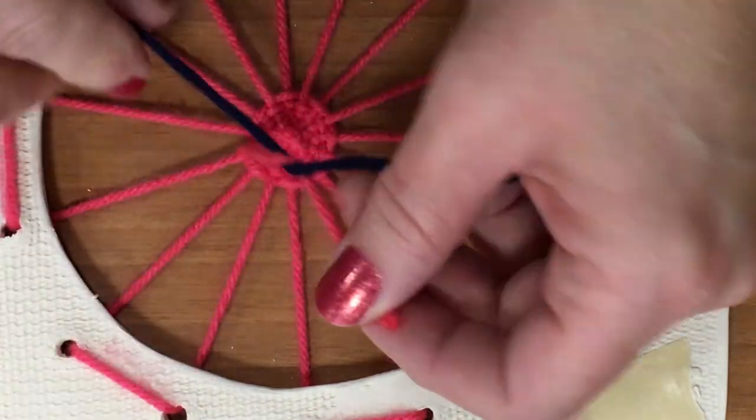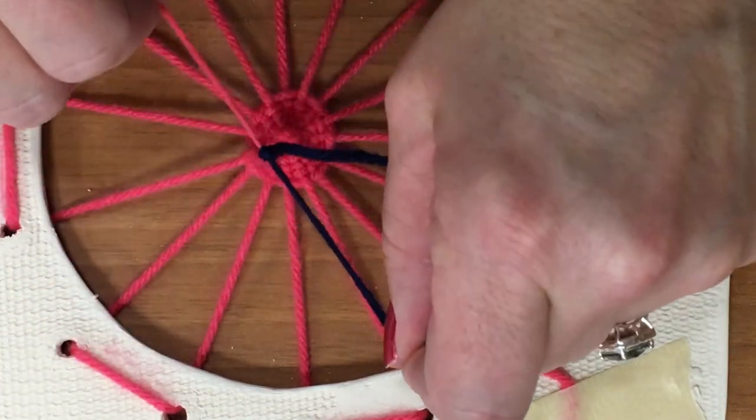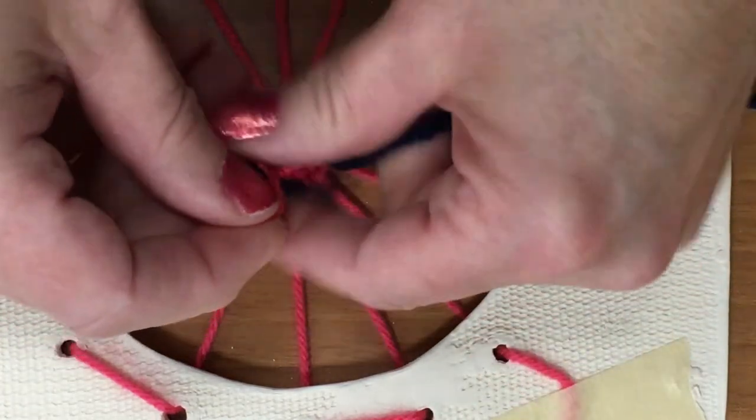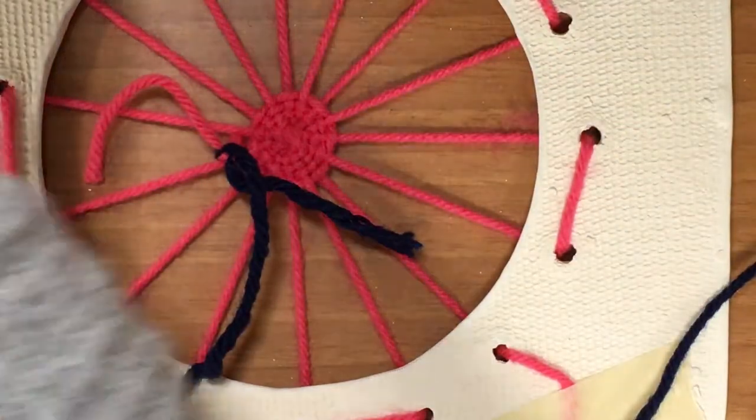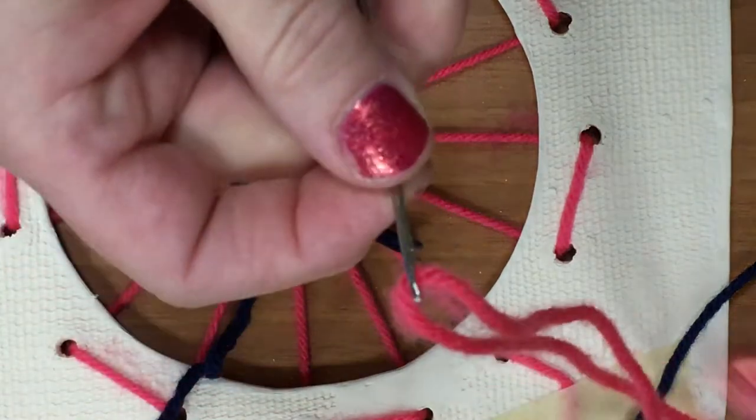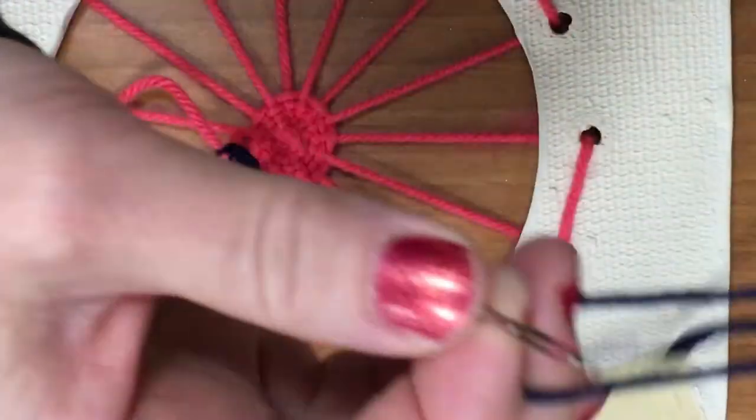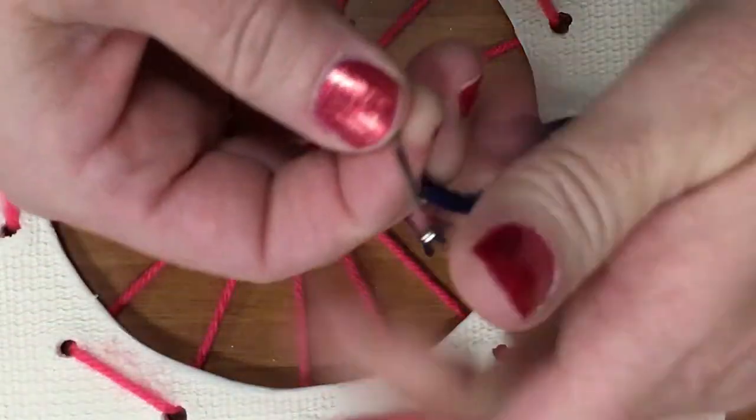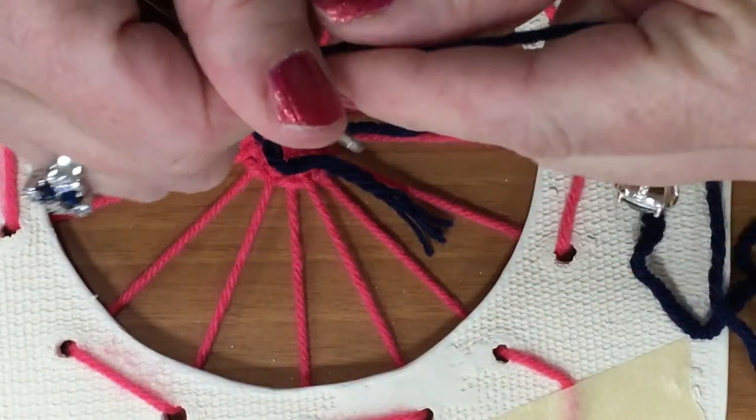So we're going to tie this together with the pink. Nice and tight. I'm going to do it one more time. Now I'm going to take my needle off the pink yarn.